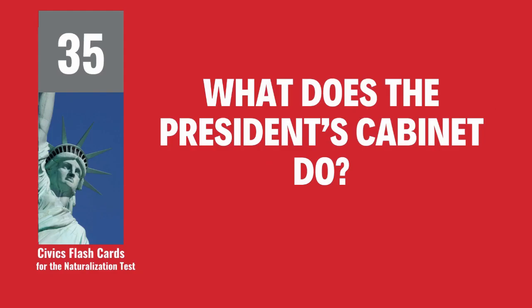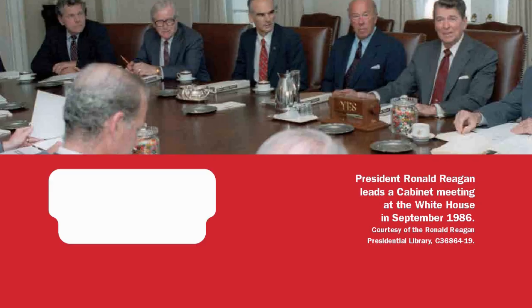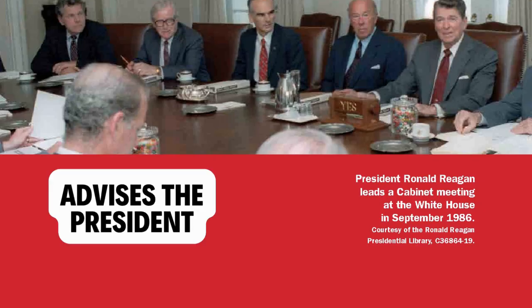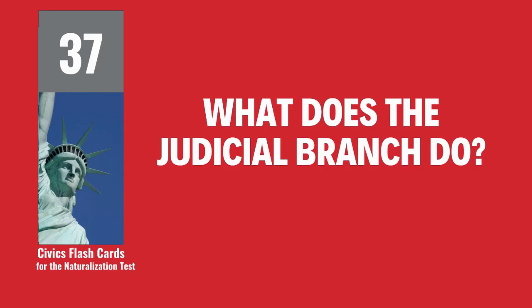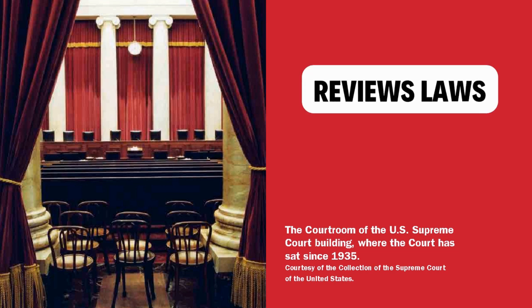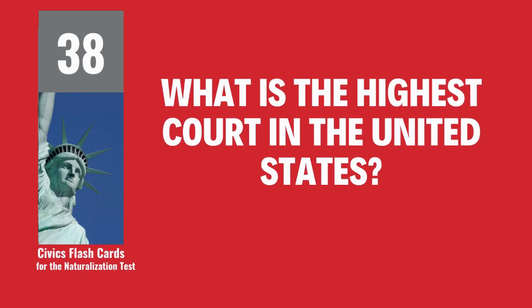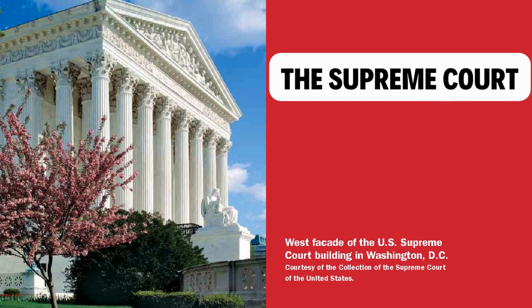What does the president's cabinet do? Advises the president. What are two cabinet-level positions? Secretary of Agriculture. Secretary of Commerce. What does the judicial branch do? Reviews laws. What is the highest court in the United States? The Supreme Court.